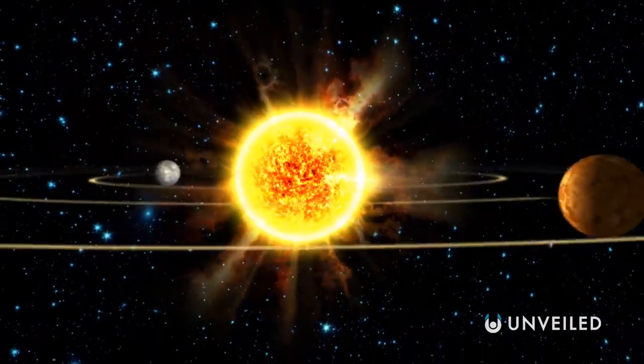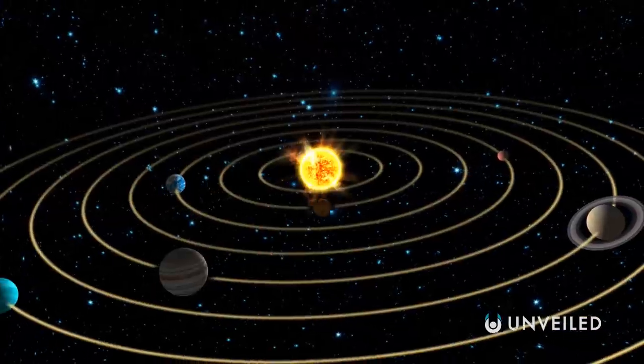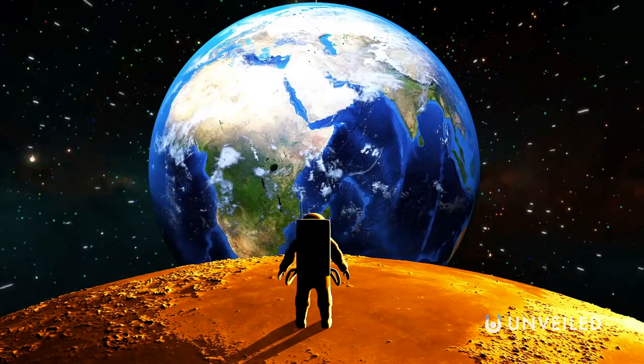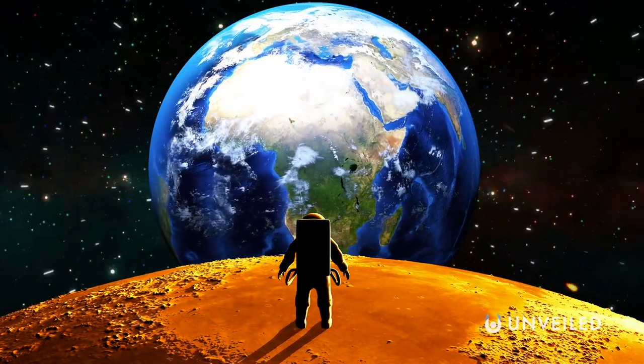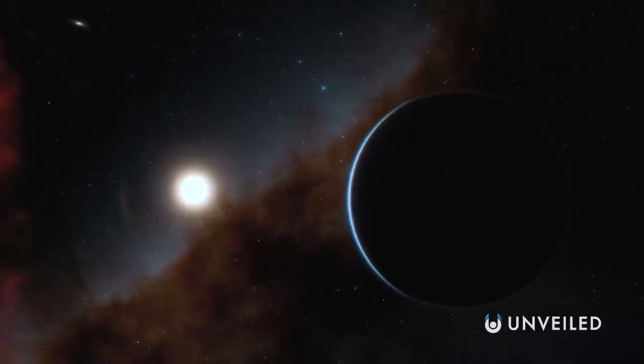In cosmological terms, the edge of the solar system is something of a movable feast. There can be millions, even billions of miles between where one person says it is and where another deems it to be. But one thing's for sure, the solar system doesn't end at Neptune. Not by a long shot.